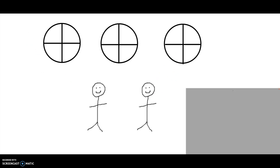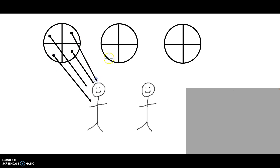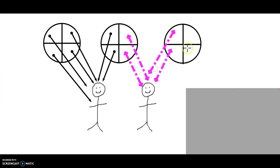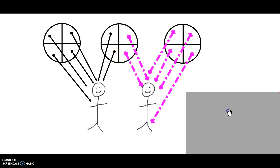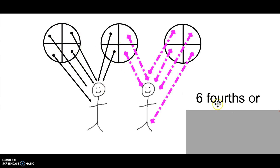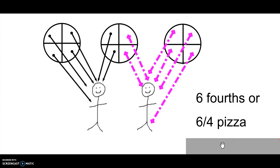Let's look at it another way. This time I cut the three pizzas into four equal parts, so each part is a fourth. Now let's share — each brother gets fourths from each pizza. Now how much of the pizza did each brother get? Six of the fourths. Written as a fraction, six-fourths of the pizzas.